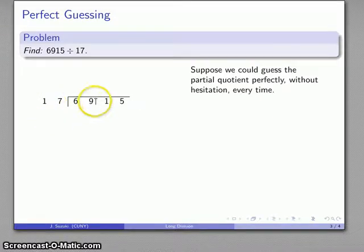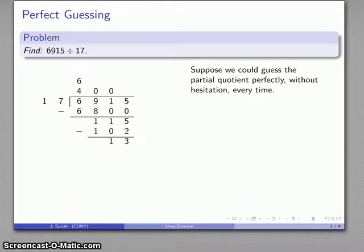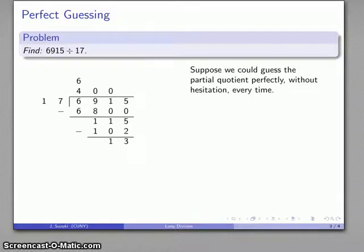17 into the first two digits, well that goes 400 times, and 400 times 17 is 6800. Get rid of that, I have 115 left over. 17 into 150, if I make a perfect guess, that's going to go 6 times. 6 times 17 is 102, and I have 13 left over. And my perfect guessing scenario, if I could guess perfectly without hesitation every single time I do this problem, then I can use the method of partial quotients very efficiently and I can read off my answer: 406 remainder 13.